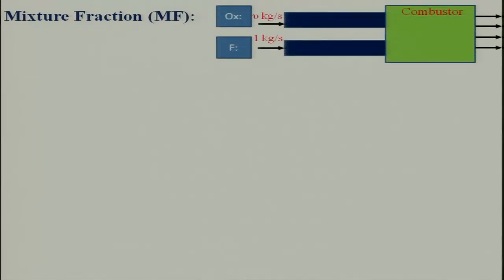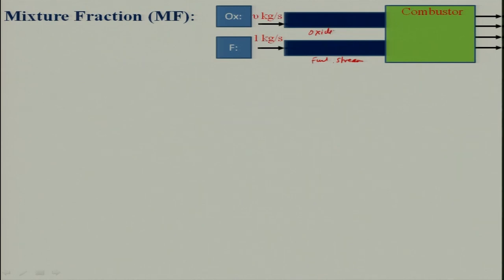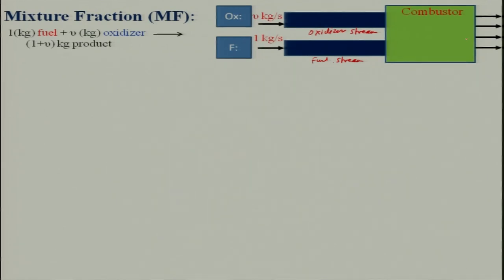In a diffusion flame, particularly at the inlet condition, people do use equivalence ratio, but they call it the overall equivalence ratio — that applies only at the inlet of the combustor. For example, consider a combustor where 1 kg of fuel stream and nu kg per second of oxidizer stream are flowing and reacting. With complete combustion, the product will be nu plus 1 kg.